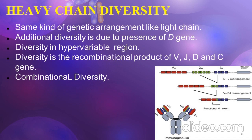The same kind of genetic diversity seen in the light chain also exists in the heavy chain, but the potentiality is relatively greater. The additional diversity in the heavy chain is due to the presence of the D gene, which is responsible for diversity — especially in the hypervariable region. In the case of heavy chain diversity, it is the recombinational product of V, D, J, and C genes. Generation of a functional immunoglobulin heavy chain gene requires two separate rearrangement events: first, D and J segments are joined to form a D-J segment, and then the V segment is joined to form a V-D-J segment. Different V-D-J segments present in different B cell clones arise as a random event, meaning any V, D, and J segment can recombine and contribute to diversity.